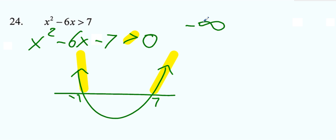Negative infinity to negative 1, with a parenthesis because it's not an or equal to, union because there's two intervals, 7 to infinity, also parentheses. There's the answer.